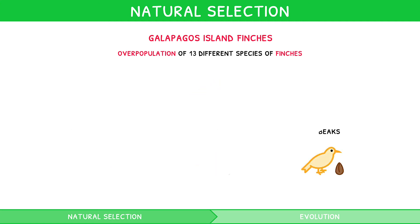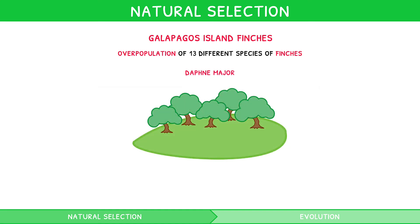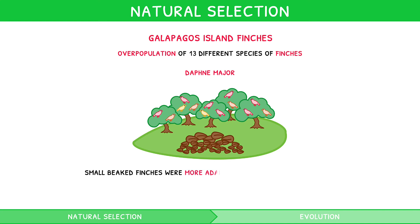The Grants observed that on Daphne Major Island, on average, there were more finches with smaller beaks. They hypothesised that there were more small seeds, and so the small-beaked finches were more adapted to survive and reproduce.